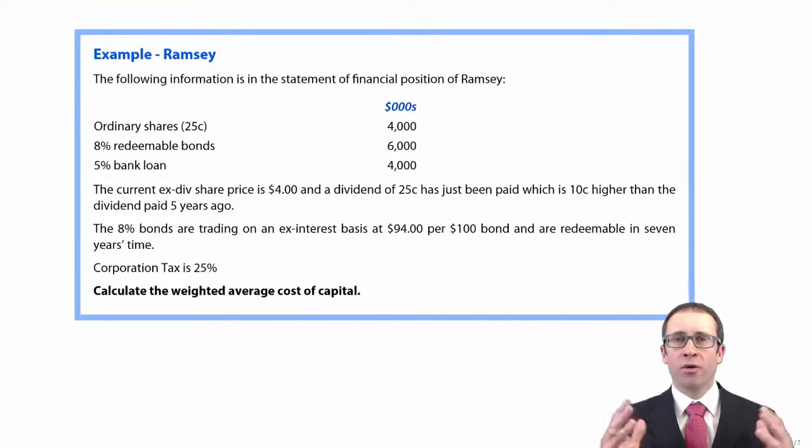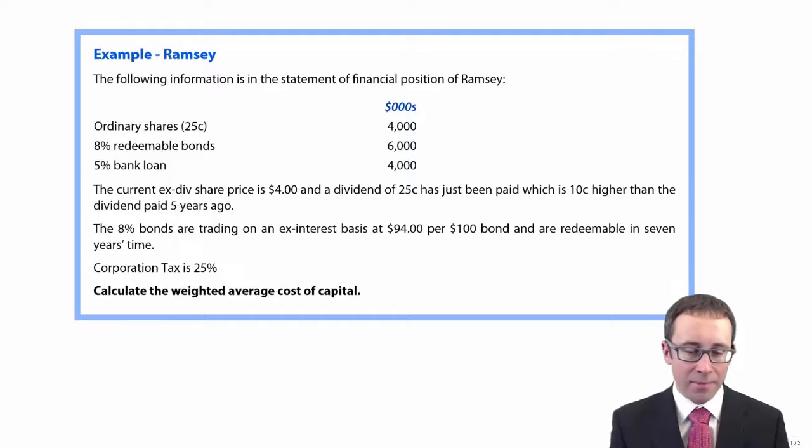OK, so we're now going to pull everything together that we've looked at by looking at the full weighted average cost of capital calculation. The example that we have here is a comprehensive example. I think it's just too comprehensive to be exam standard. Exam standard questions would have a little bit less information and therefore make it easier to digest. This one here is just as an example to see that you understand all the component parts that feed into your weighted average cost of capital calculation. So let's go through and have a look at it step by step.